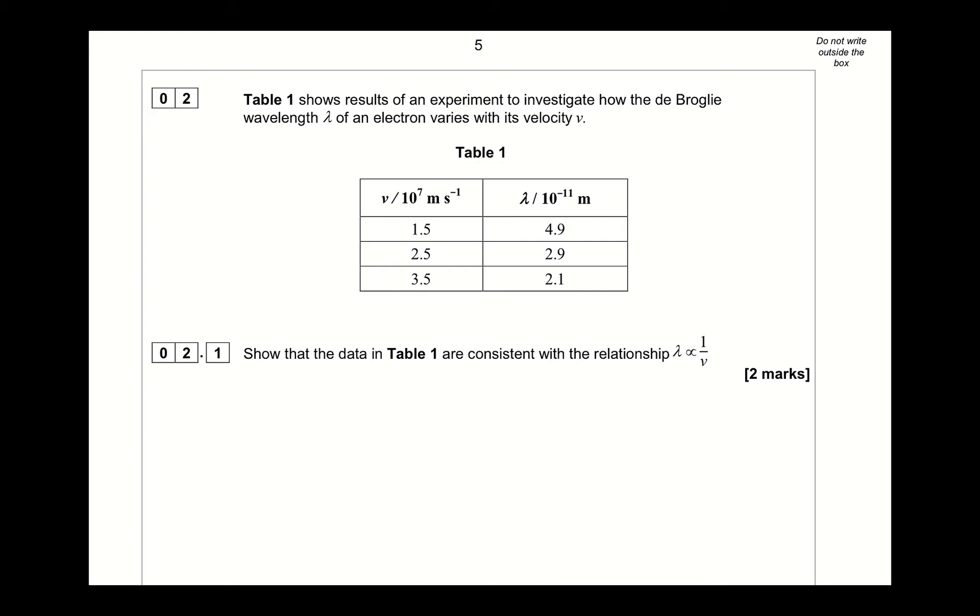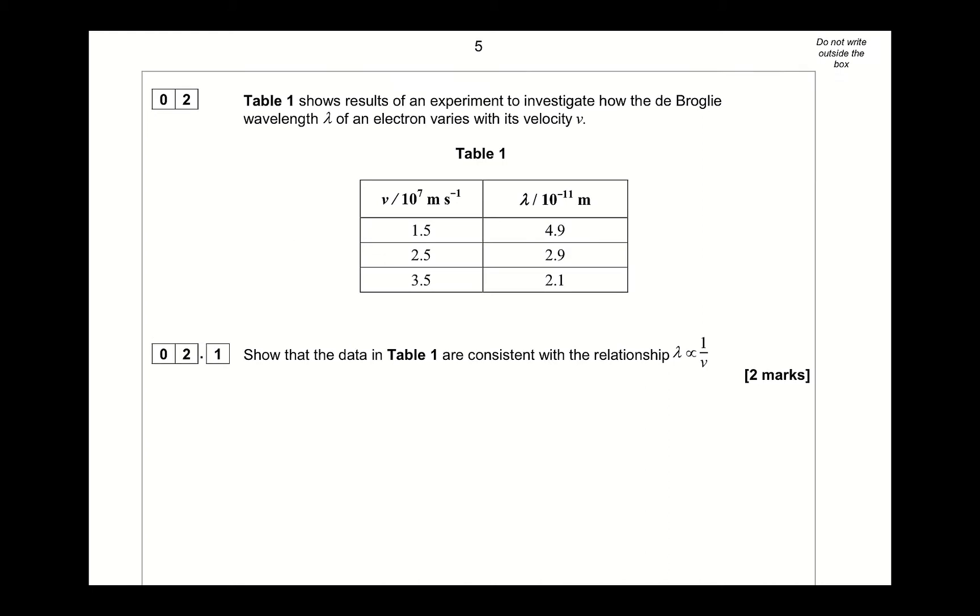So if you're trying to do this, what you have to realize is that basically if you're saying this, what you're saying is that lambda equals k over v. So what you have to do is find k. So k should equal lambda v.